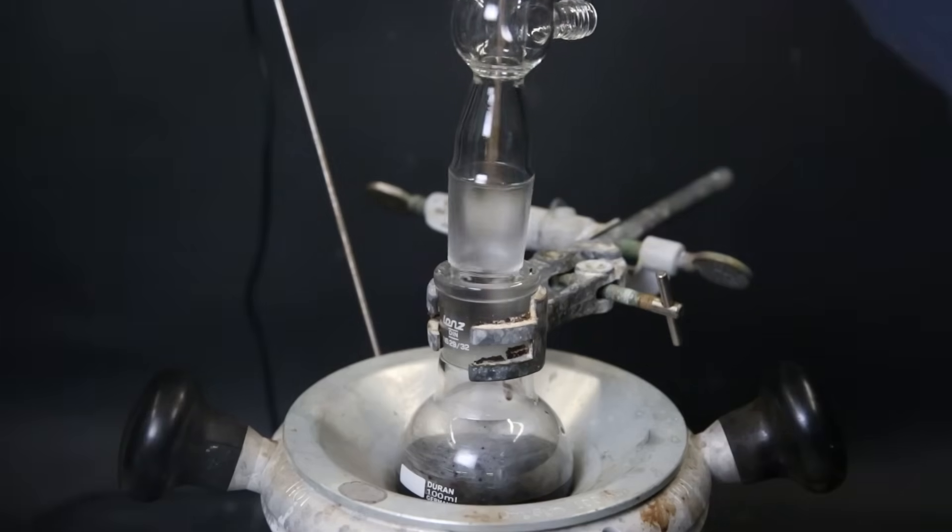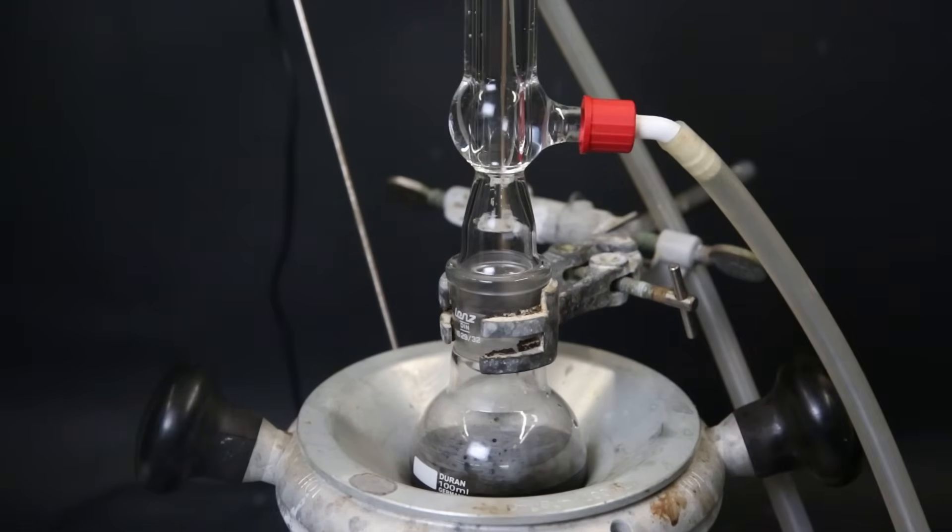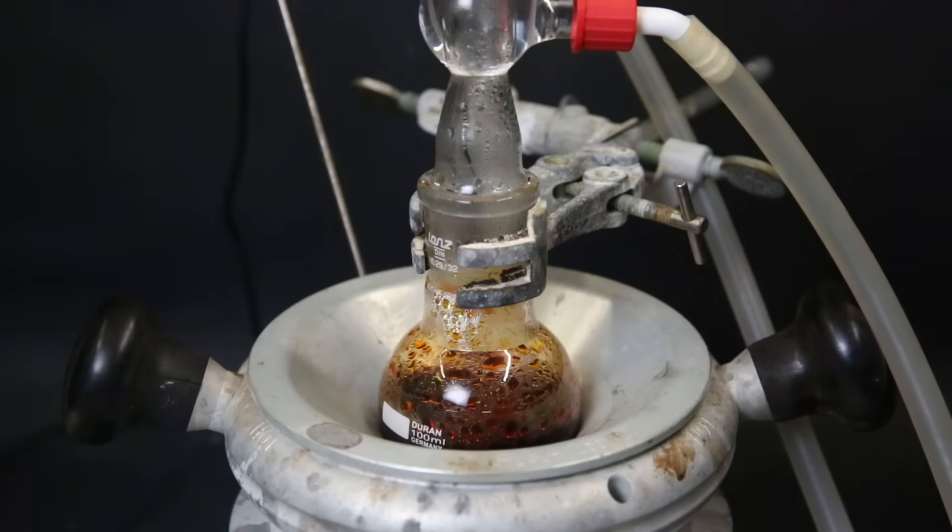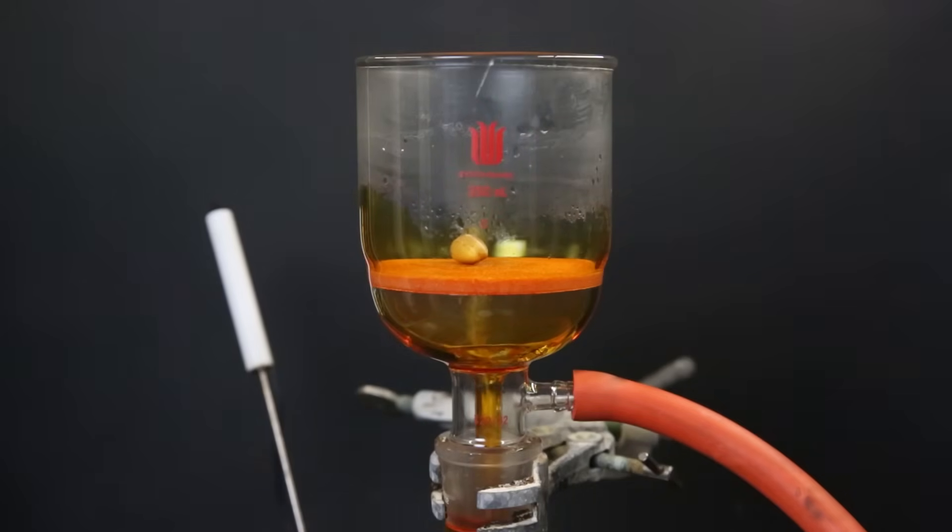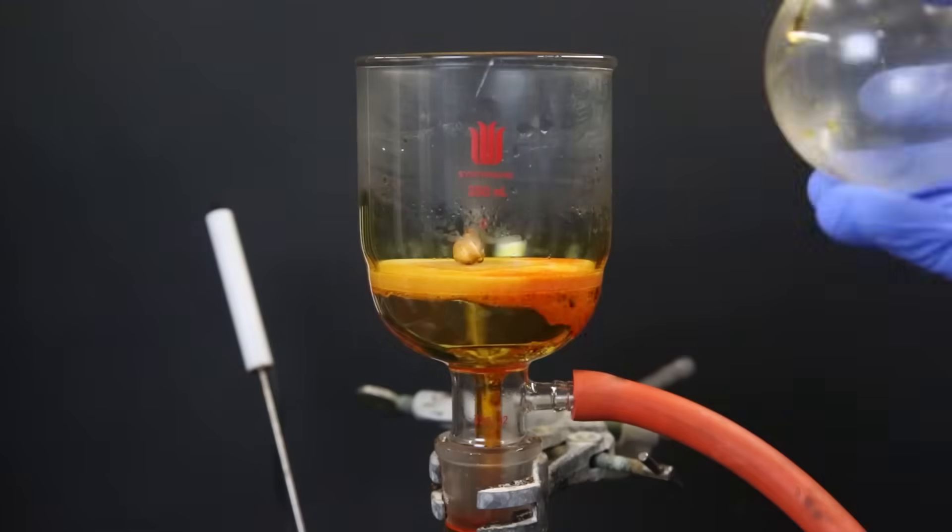I then fit a condenser on top and reflux the mixture for 30 minutes. When that is done, we can clearly see the mixture has turned to an orange red color. Now to remove any undissolved material, I filter it through a glass fritted filter. But it seems that pretty much nothing was left behind.